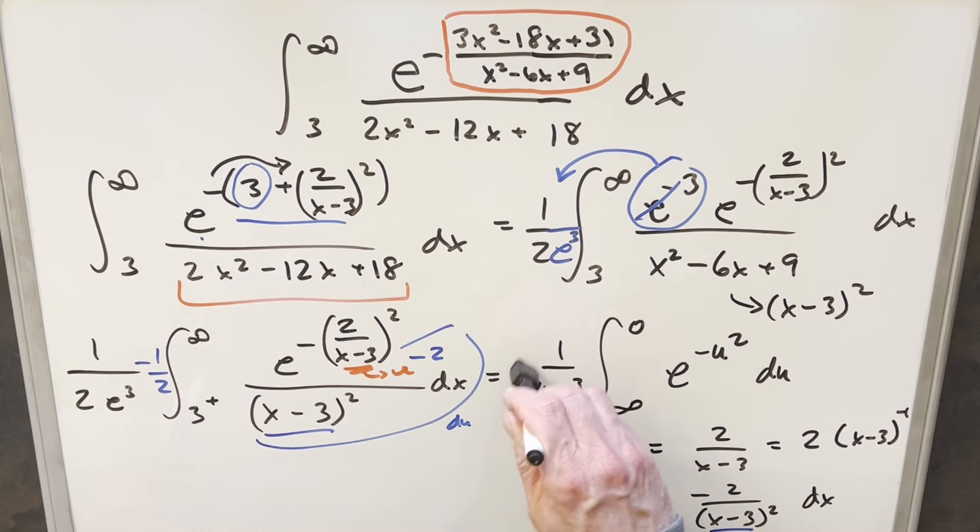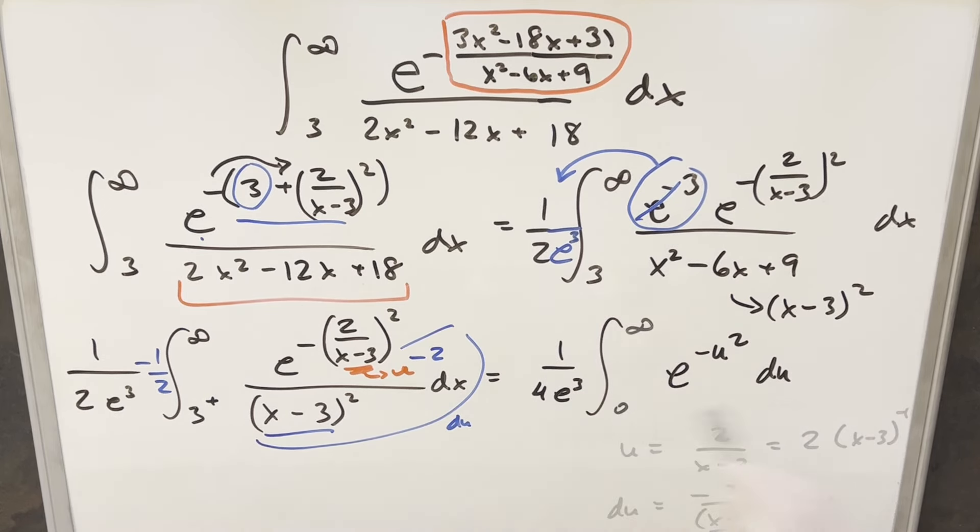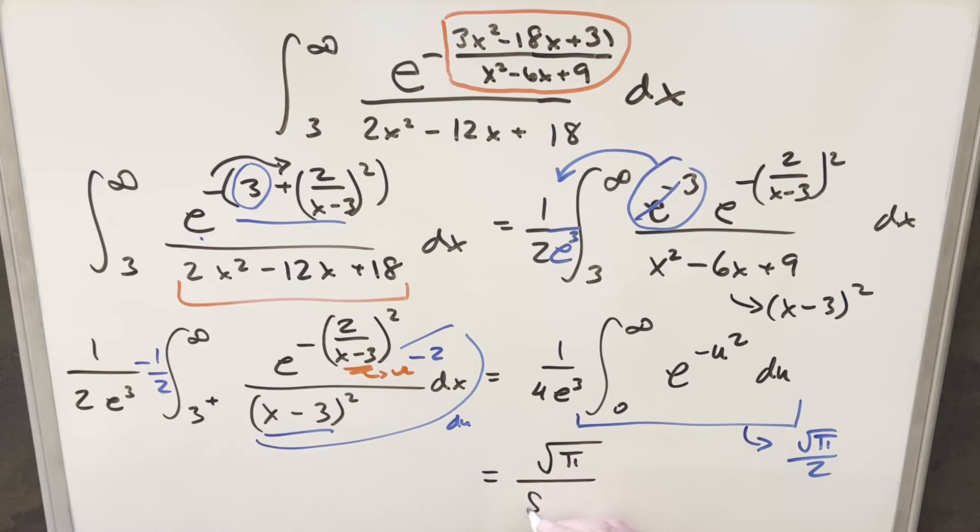But then we'll just take this minus sign and we'll use it to swap our bounds. But then at this point, all we need to do to finish it off is just recognize that what this is, this is the Gaussian integral. So we know the value of this is actually going to be square root of pi over two. So multiplying square root of pi over two times one over four E cubed, we get our final solution of just square root of pi over eight E cubed.